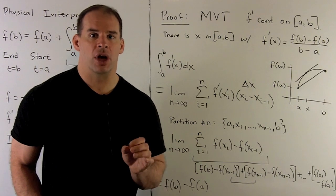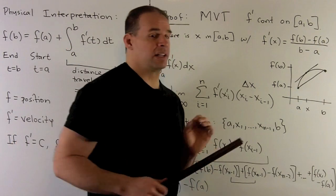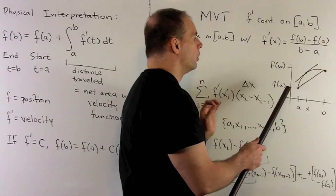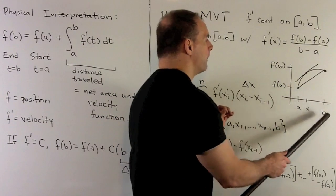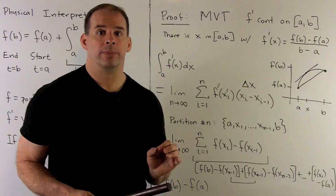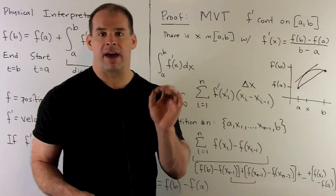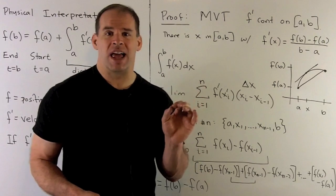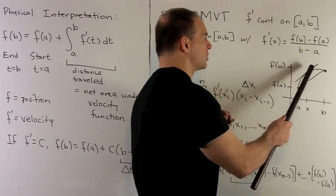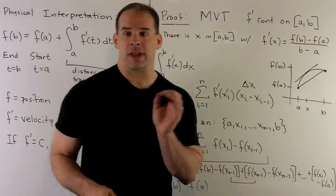For our proof, everything hinges on the Mean Value Theorem, so we review that first. The assumption we need — which is the one we have — is that f prime is continuous on the closed interval [a, b]. We draw a graph of f and the secant line through (a, f(a)) and (b, f(b)). The slope of the secant line is (f(b)−f(a))/(b−a). The Mean Value Theorem says somewhere in our interval there's a point x where the slope of the tangent line equals the slope of the secant line, meaning f prime of x equals that slope. Geometrically, those two lines are parallel.